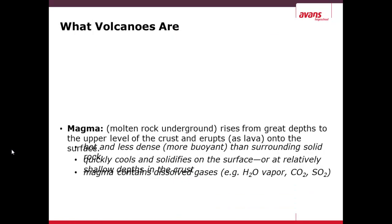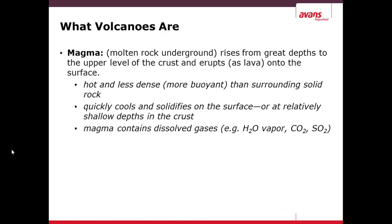What volcanoes are: they consist of magma, which is molten rock from underground, which rises from great depths to the upper level of the crust and erupts as lava onto the surface. So magma is the underground molten rock, and when it erupts, it's known as lava.